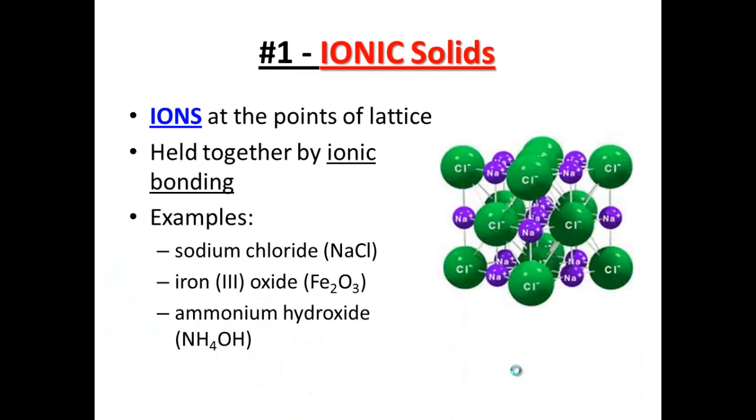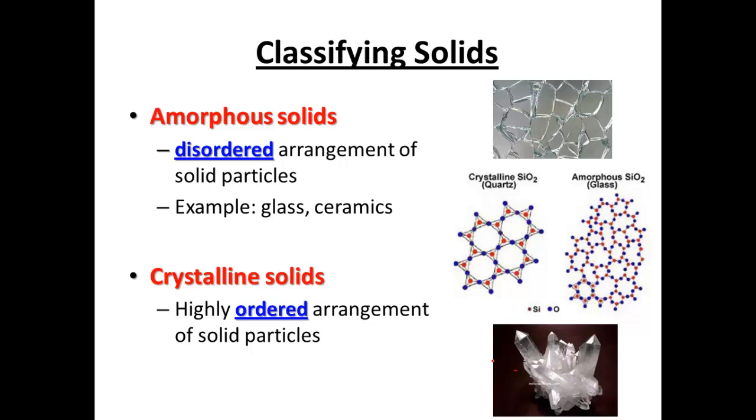Let's get going. So backing it up, the major classifications of solids are the amorphous solid and the crystalline solid. The amorphous solid is basically a highly disordered arrangement of solid particles. Some really good examples of amorphous solids are like glass and ceramics. Here's what amorphous glass looks like at the molecular level. It's highly irregular. There is no regular repeating pattern to this.